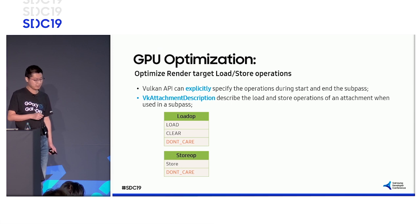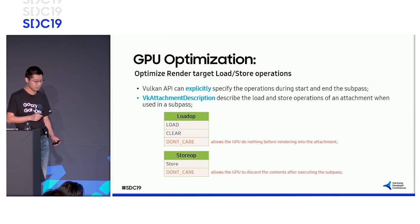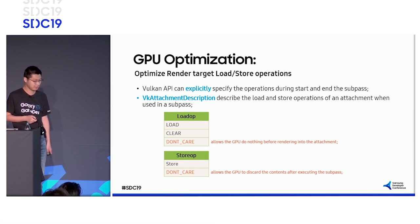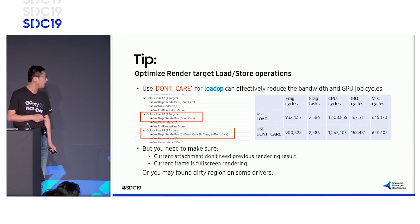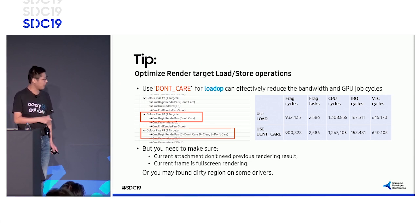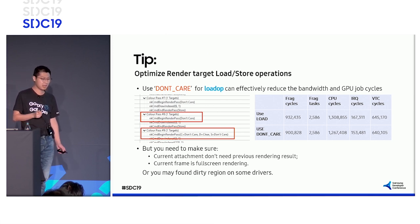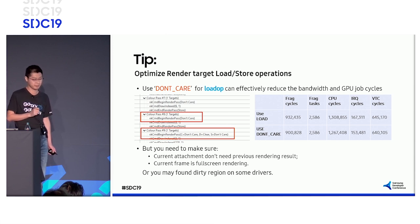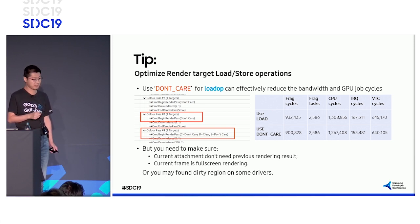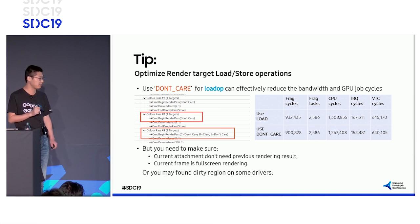For render passes, we need to care about the load operation and also the store operation. We should use 'don't care' for best performance — these can be set in the VkAttachmentDescription. Using 'don't care' gives us fewer GPU operations, but we must be careful. Sometimes using 'don't care' may cause dirty region issues. We need to make sure the current attachment truly doesn't need previous rendering results, and that the current frame is a full-screen render. If not, then we should use 'clear' instead.